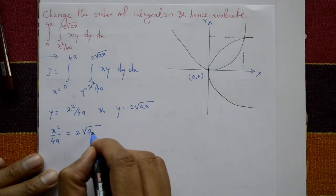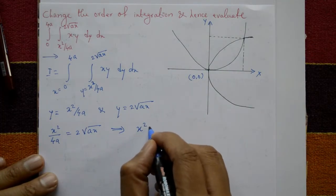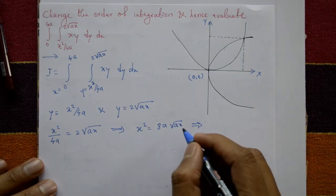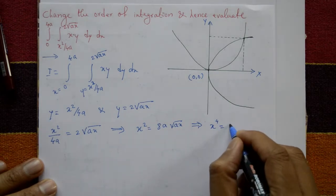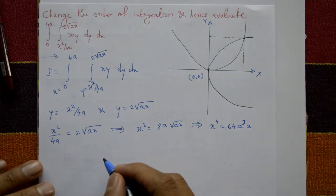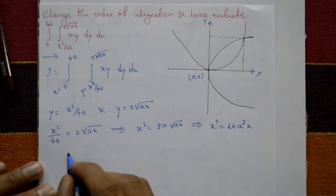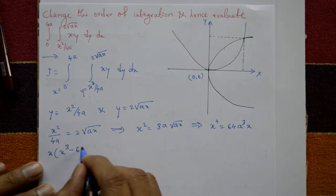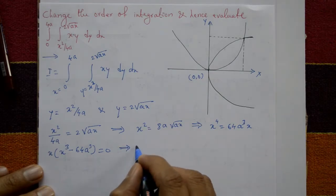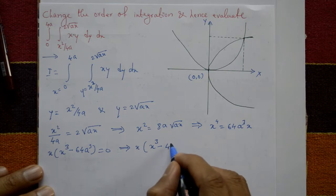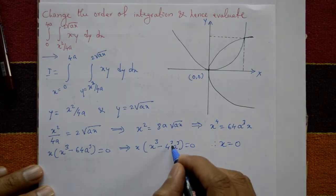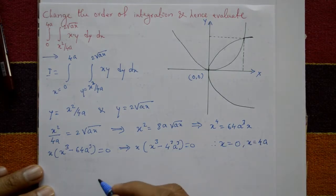Set x squared by 4a equal to y, and y equals 2 times square root of ax. Cross-multiplying: x squared equals 8a times square root of ax. Squaring both sides, we get x to the 4 equals 64 a squared times ax, which is 64 a cubed times x. Taking this to the left-hand side with x as a common factor: x times (x cubed minus 64 a cubed) equals 0. Therefore x equals 0 and x cubed equals 4 cubed a cubed, giving x equals 4a.